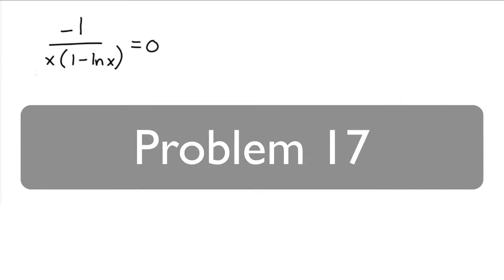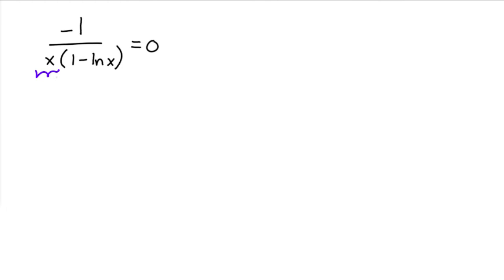First off, I know that this is going to be undefined when x is equal to 0. So that's my first spot. And then I also want to see, I want to solve 1 minus natural log of x, where does that equal to 0. So if I move the ln of x over to the right side,